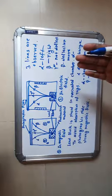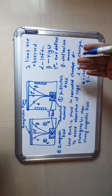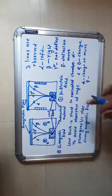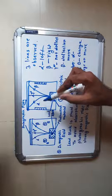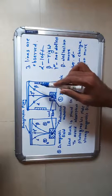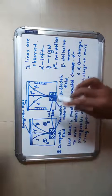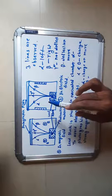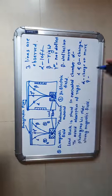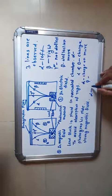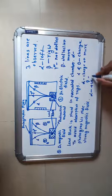The alpha particles are deflected towards the negative plate and beta particles are deflected towards the positive plate. But gamma rays are not deflected.